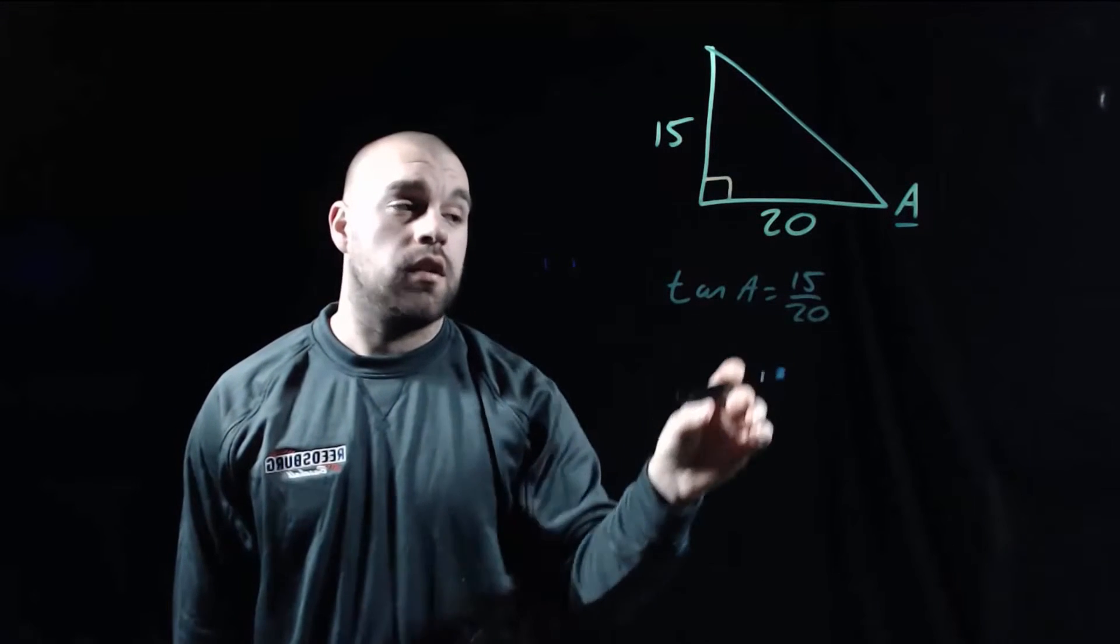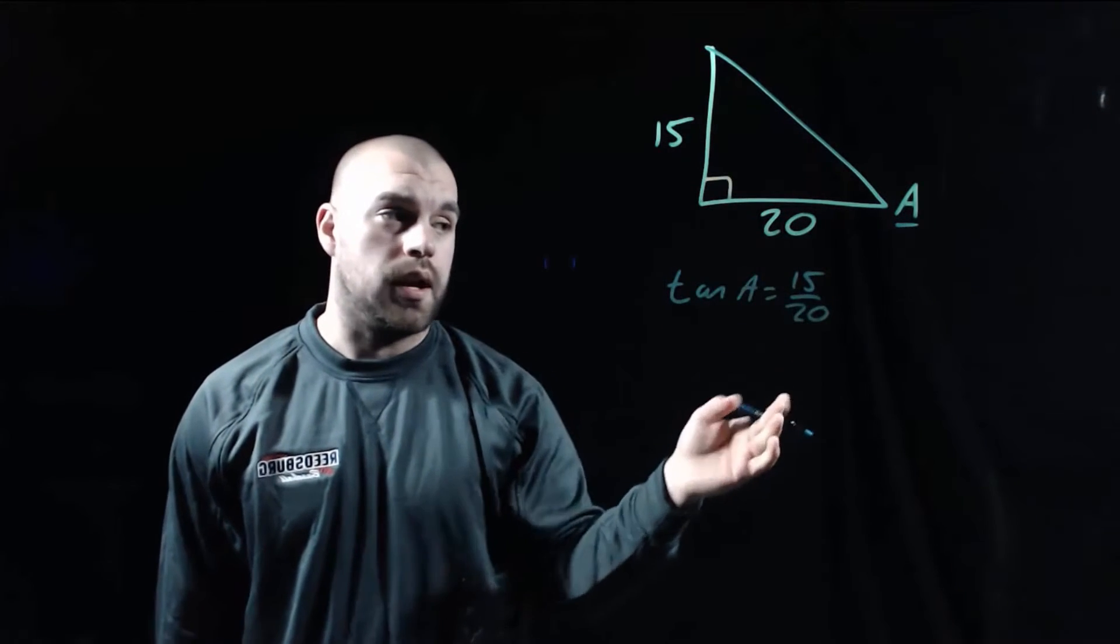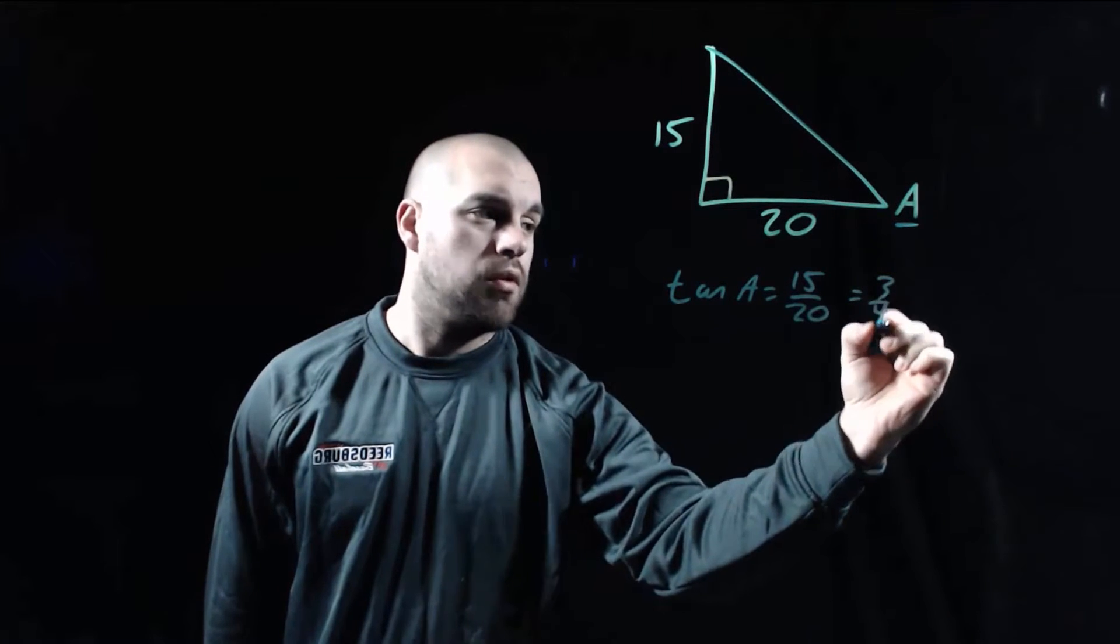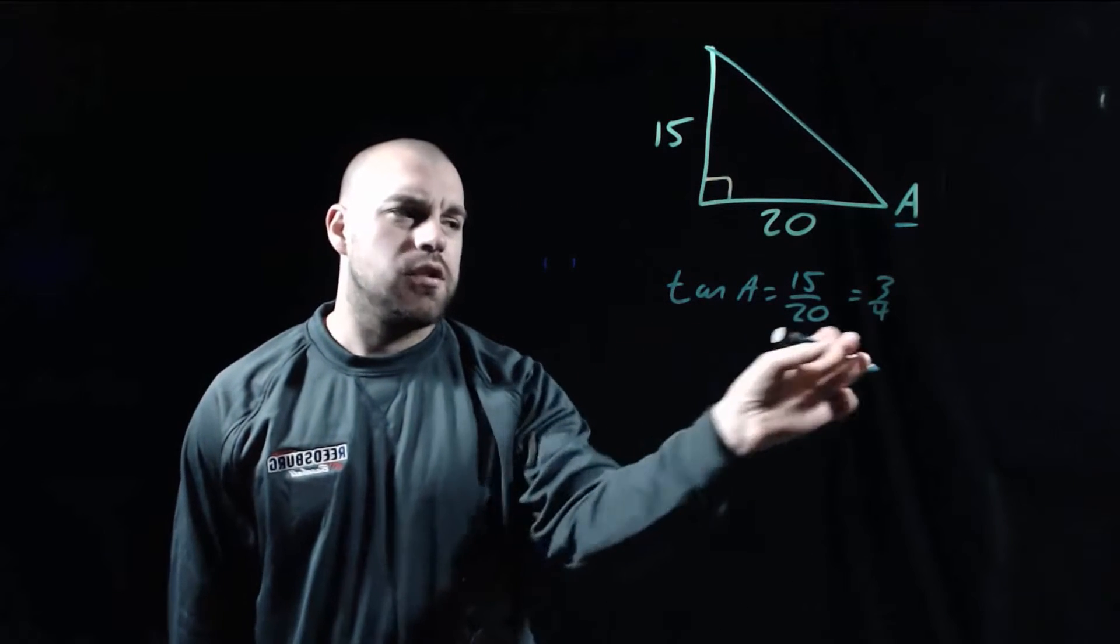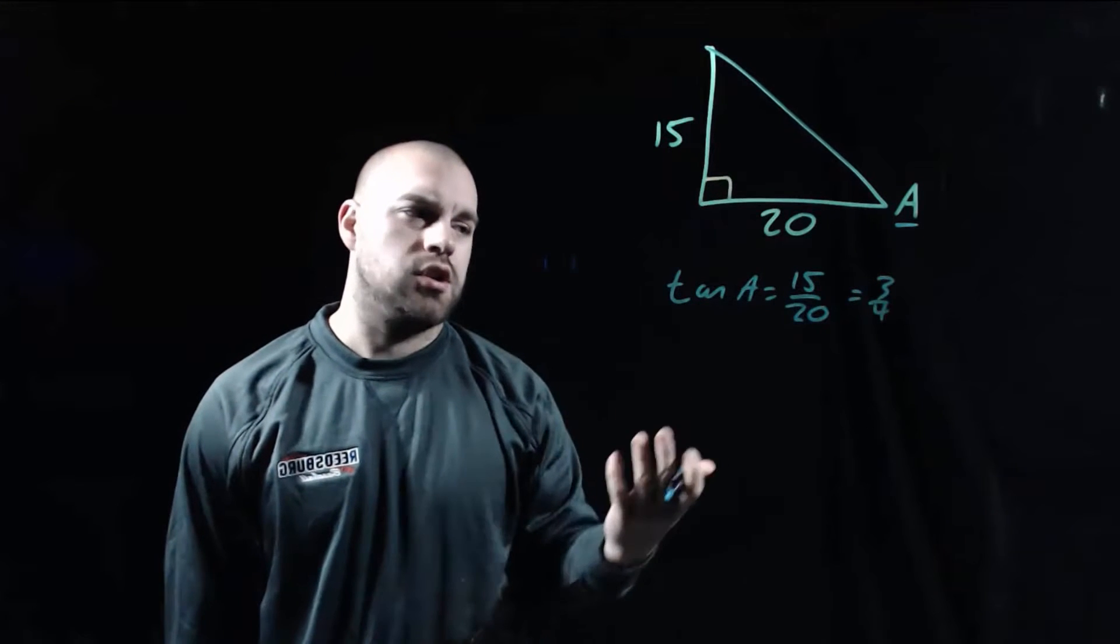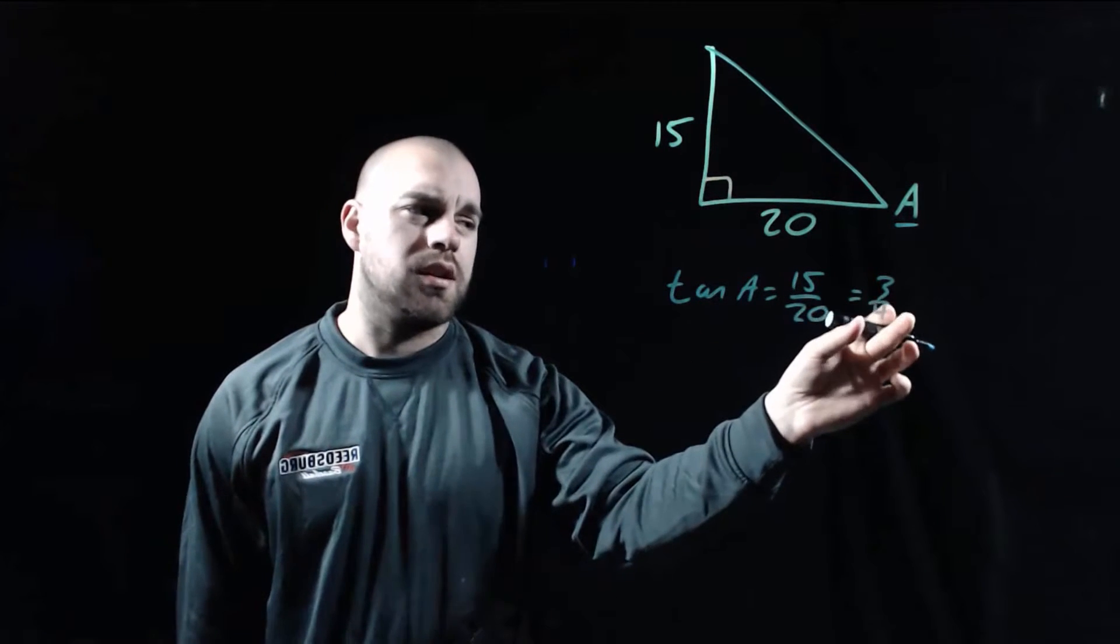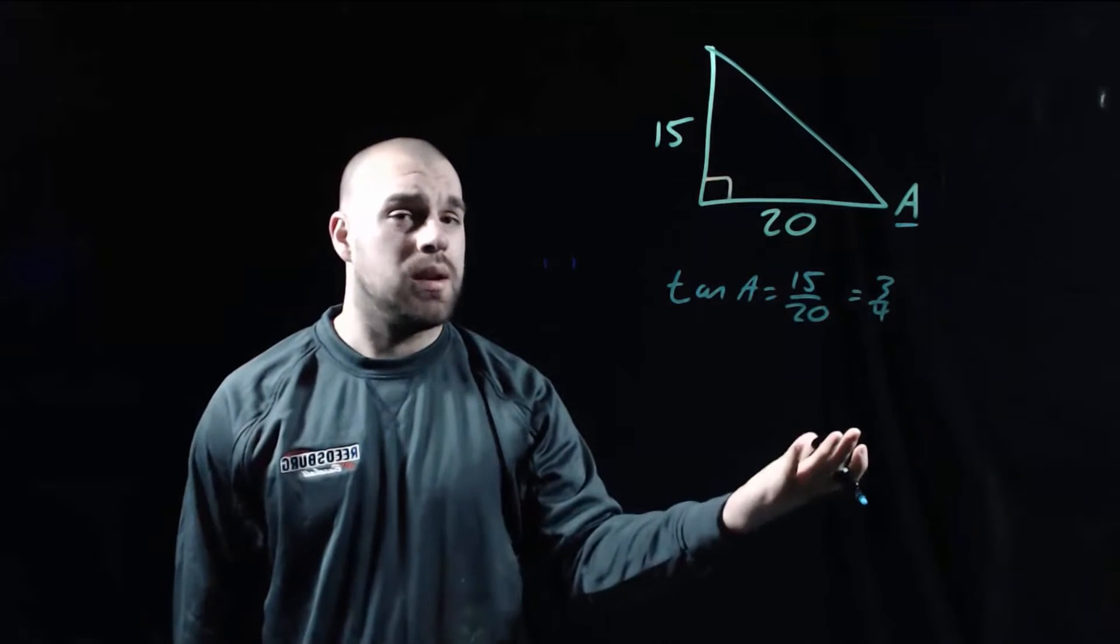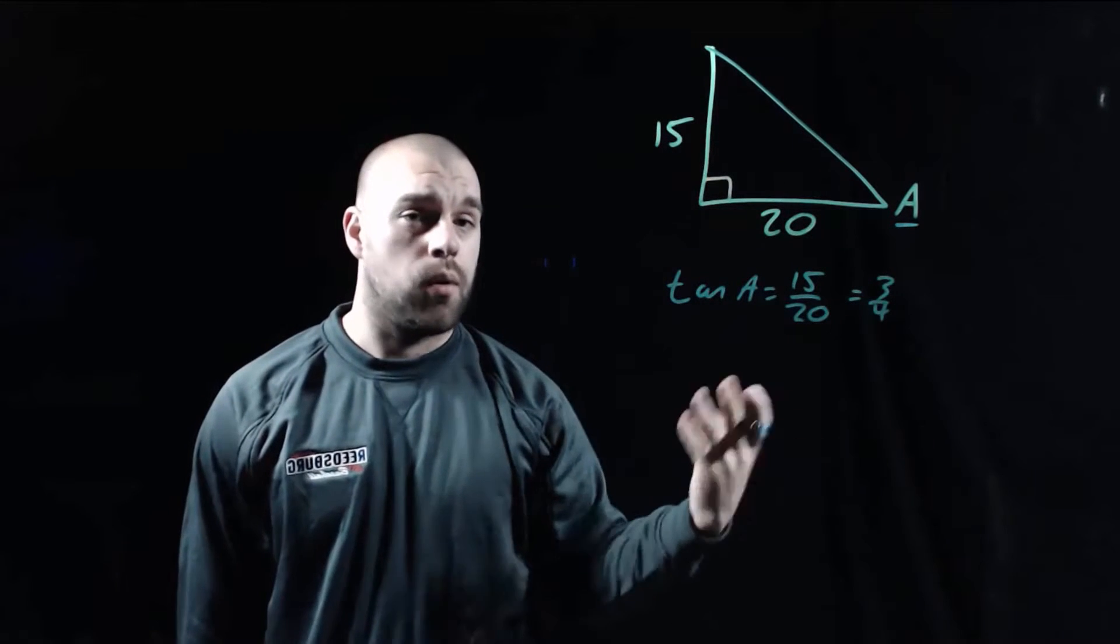So we get the tangent of angle A is equal to 15 over 20, but we can reduce down that fraction. That's the same as 3 fourths. But instead of just looking at this tangent fraction, what I want to do is figure out how big angle A actually is. So I'm actually going to take this fraction and turn it into a decimal. If we take 3 divided by 4 we get 0.75.